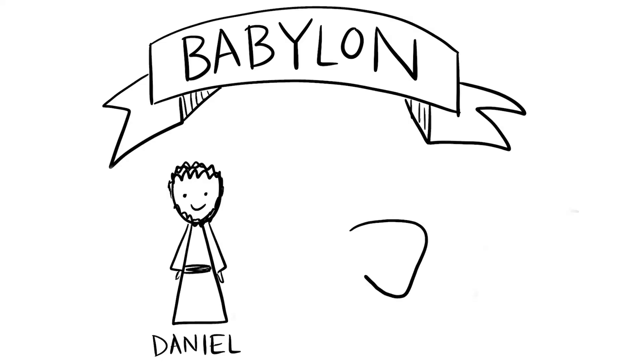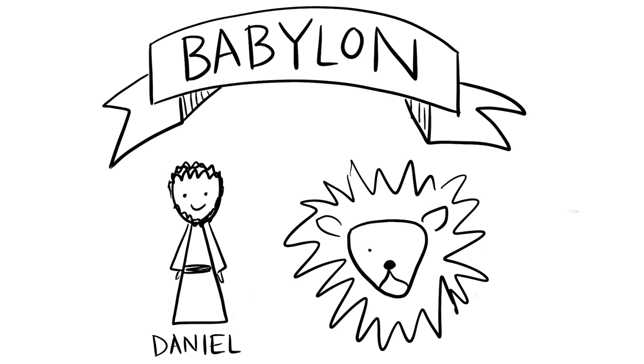Later, a king named Darius made a law that everyone was to pray only to him and no other God. Daniel would only pray to the one true God, no matter what the king's law said. So he was arrested and thrown into a den of lions. Miraculously, God stepped into both the fiery furnace and the den of lions to protect these men. God showed that he was the one true God worthy of all worship.